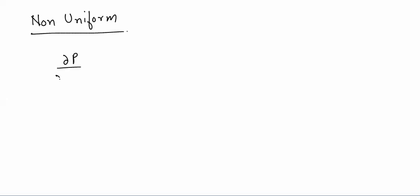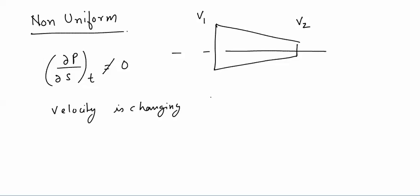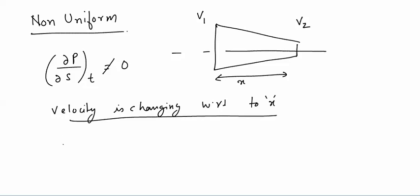In non-uniform flow, ∂p/∂s at a given time is not equal to zero. Consider a reducer where area is reducing: the velocity at one point is v₁ and at another is v₂. The velocity is changing with respect to x, hence the flow is non-uniform.